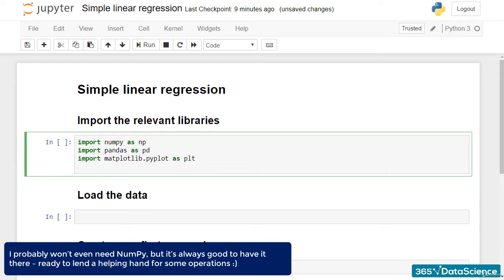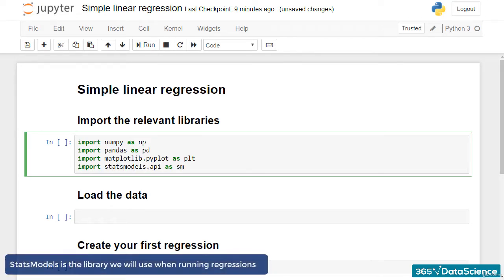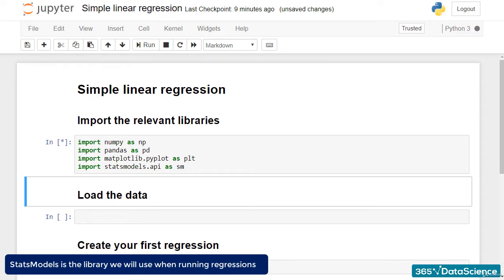I probably won't even need NumPy, but it's always good to have it there, ready to lend a helping hand for some operations. In addition, I'll import statsmodels.api as sm. That's the library we will use when running regressions.